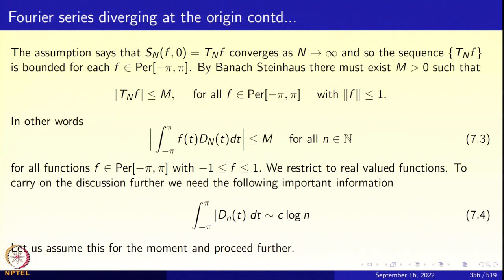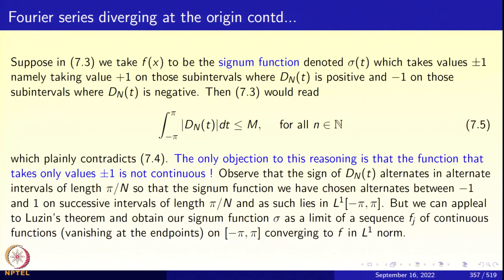The idea is to take f(t) to be the signum function, namely the sign of Dₙ(t). If Dₙ(t) is positive on an interval, declare f(t) = 1 there; if negative, declare f(t) = −1. Then the left-hand side of 7.3 exactly gives you the left-hand side of 7.4, and the right-hand side of 7.4 is c·log n, giving the contradiction. But the technical issue is that the signum function is not continuous, so we must get around this difficulty.